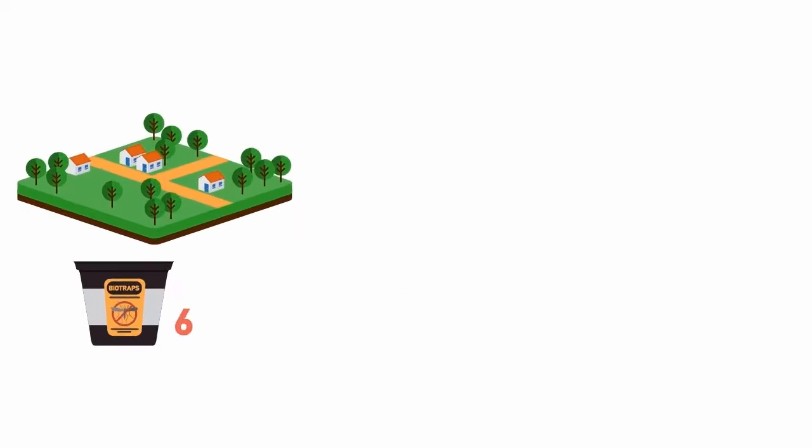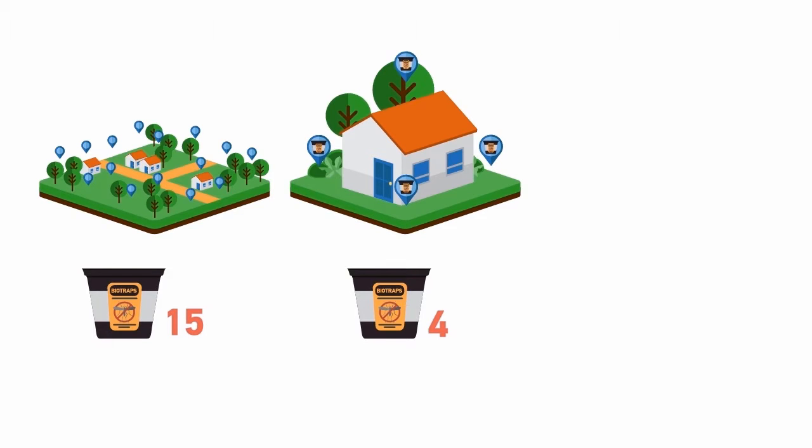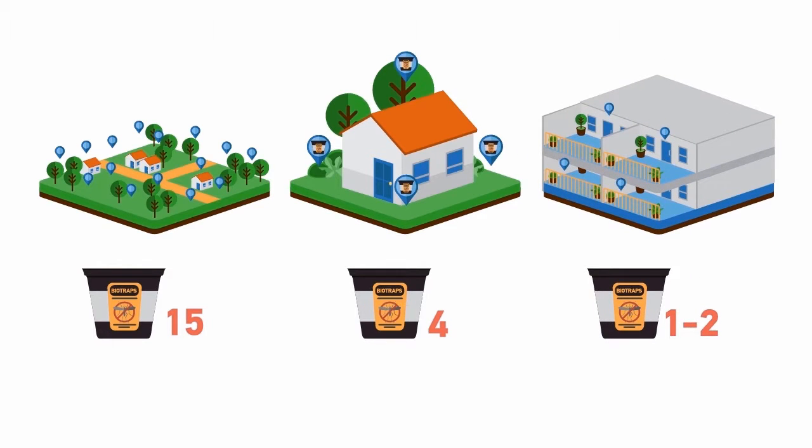A: 15 per acre, B: 4 per house, C: 1 to 2 per apartment.